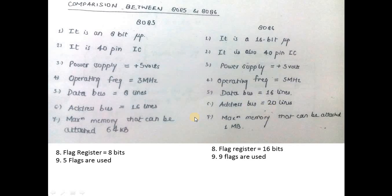Data bus is 8 lines in 8085 and 16 lines in 8086. Address bus is 20 lines. The main point you should remember for the exam is the maximum memory that can be attached: 64 KB for 8085 versus 1 MB for 8086.